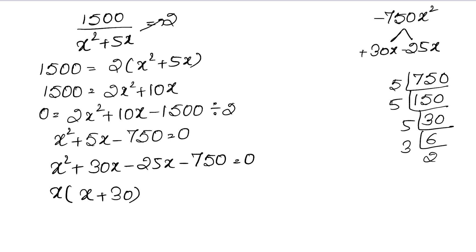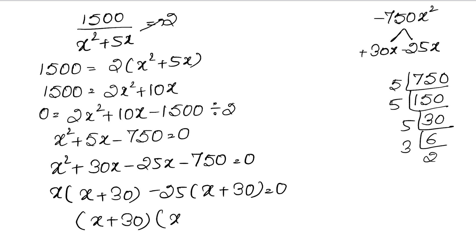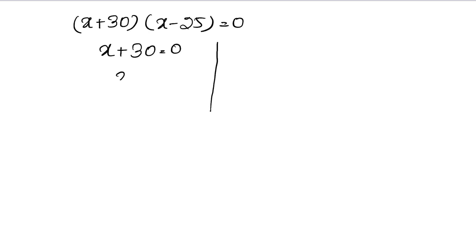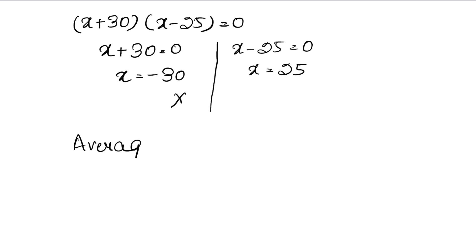Taking x common from the first two terms gives x(x plus 30), and taking minus 25 common from the last two gives minus 25(x plus 30), so (x plus 30)(x minus 25) equals 0. Setting x plus 30 equal to 0 gives x equals minus 30, which is not possible since speed cannot be negative. Setting x minus 25 equal to 0 gives x equals 25. So the usual speed is 25 km per hour.